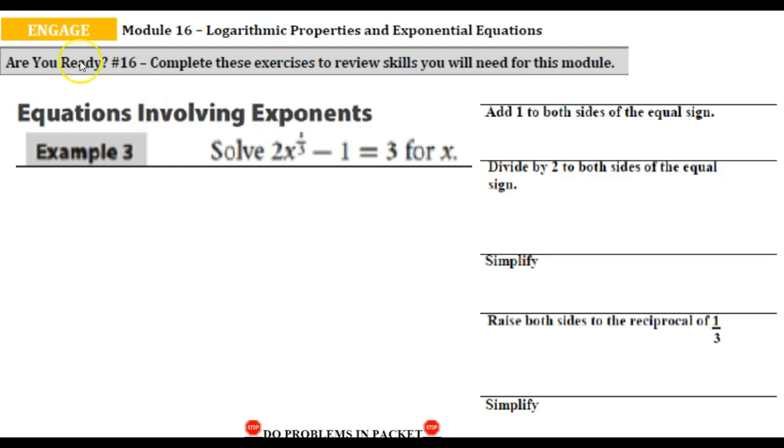And last but not least, the last engage activity from Are You Ready number 16, solving equations with exponents. So just as your notes probably list here, we're going to first try and isolate x by first getting rid of whatever's being added or subtracted. In this case, we're going to get rid of this negative one by adding one to both sides. That's going to cancel out and we're left with 4 equals 2x to the 1/3rd power.